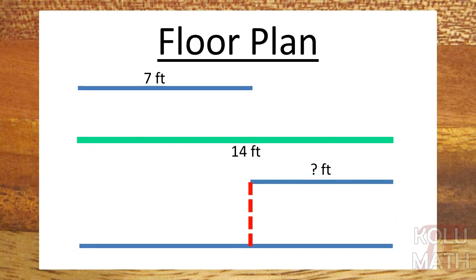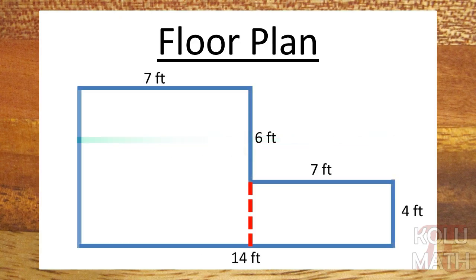So if I know that this side is 7 feet, the whole length is 14, I can subtract that. 14 minus 7 is 7 feet, and you can check that by saying 7 feet plus 7 feet is 14 feet. So we've just calculated the missing side.